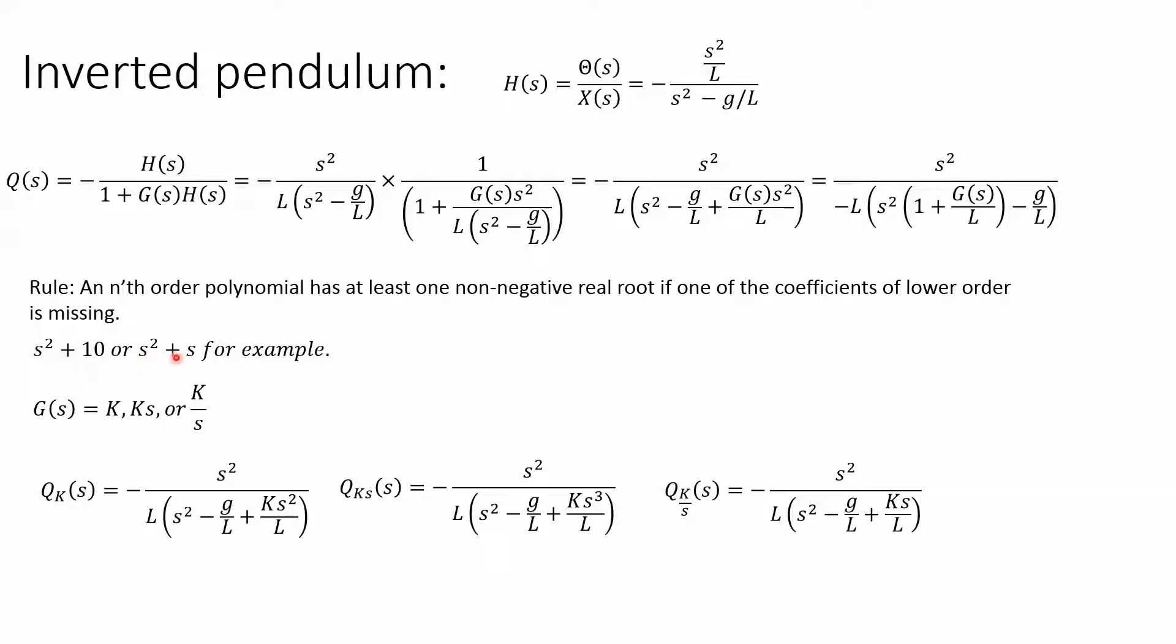If I have s² + s, the constant term or s⁰ is missing, so both of these will have some positive root or root equal to zero and will be unstable.